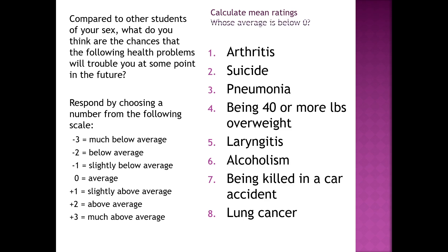Normally I ask people to raise their hands in class, but I can't see you. So whose average is below zero? Almost everybody raises their hand on that. Almost everybody thinks that their risk on average of these different things — maybe some of them you've had — is below average. Most people, not just students, think they have a lower likelihood of experiencing these health-related outcomes than somebody of their same basic age and sex. It's what we call unrealistic optimism.